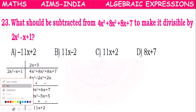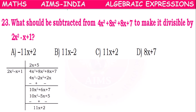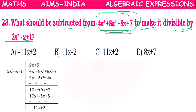The question is: what should be subtracted from 4x³ + 8x² + 8x + 7 to make it divisible by 2x² - x + 1? From this expression, what should be subtracted to make it divisible by this.